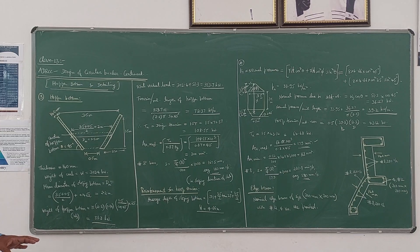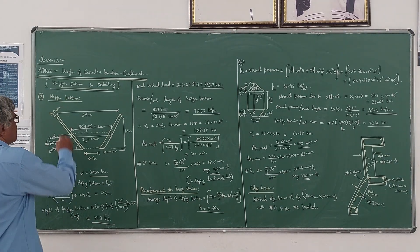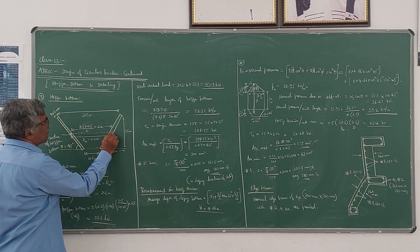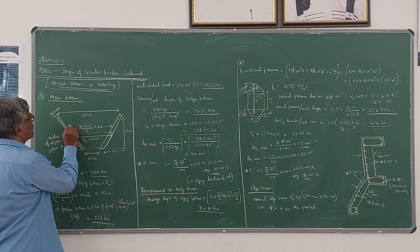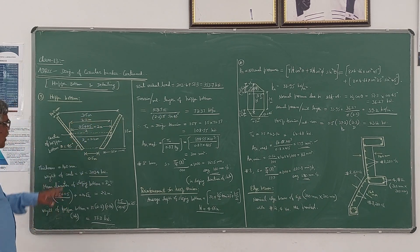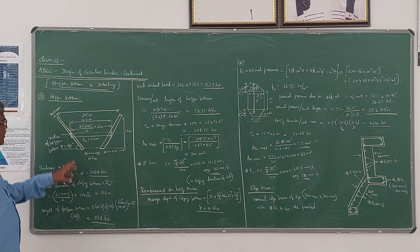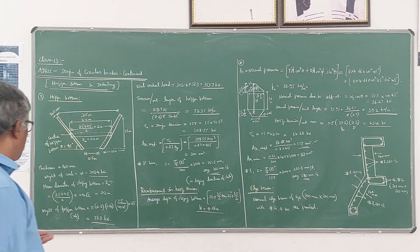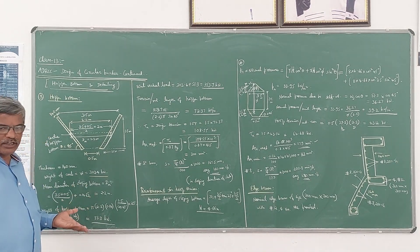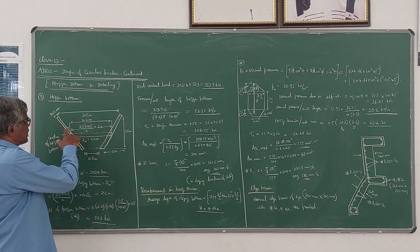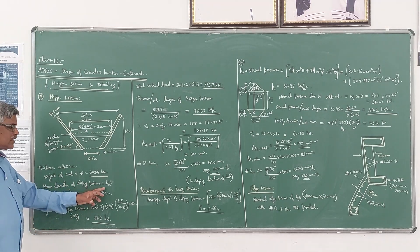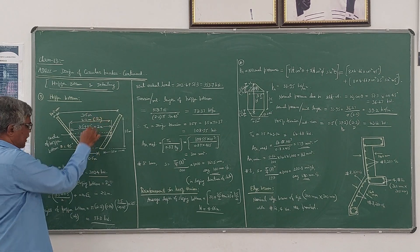Now what we have to do is calculate the mean diameter of the sloping bottom. Mean diameter means from the center of this hopper bottom wall to the center of this side. We calculate the average value using: average of 3.5 to 0.5, plus the wall thickness 0.14 meter divided by sine of the angle. This gives root 2 coming to the numerator. So the mean diameter dm comes out to be 2.2 meter.